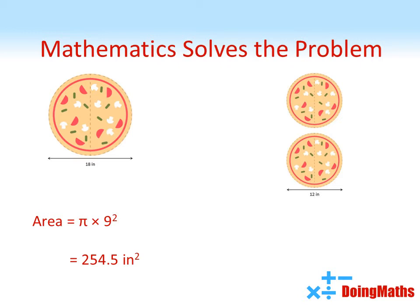For the medium pizzas we have two pizzas each of radius 6 inches so we take 2 times pi times 6 squared to get a total area of 226.2 square inches. So there we have it, the large pizza gives the most pizza for your money.